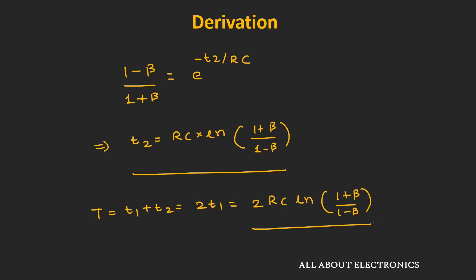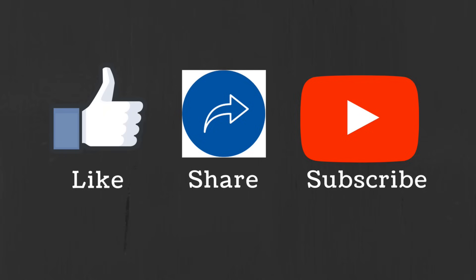In this way, we derived the expression for the time period of the astable multivibrator designed using the op-amp. Using this expression, we can design an astable multivibrator for any desired frequency. I hope this video helped you understand how to design an astable multivibrator using the op-amp. If you have any questions or suggestions, let me know in the comments. If you liked this video, hit the like button and subscribe for more such videos.